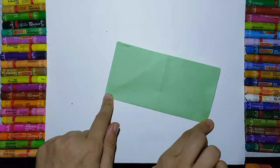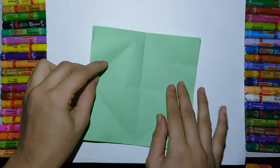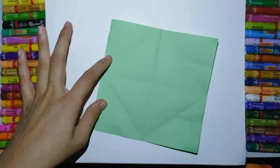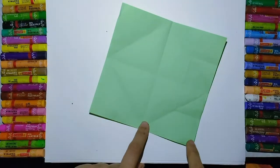Open this paper and you will get the plus sign. These are the four corners: one, two, three, four. This is the center of the paper.